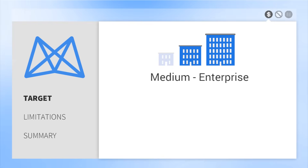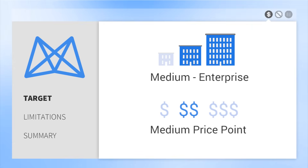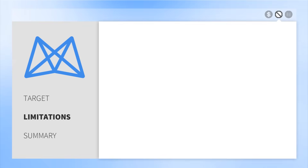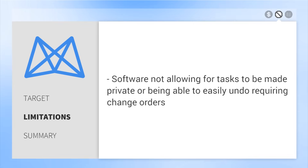Made for mid-sized companies to enterprises, Mavenlink is available at a medium price point. A limitation we noticed and confirmed from reviews on our website is that there are a few minor frustrations, such as the software not allowing tasks to be made private, or being able to easily undo requiring change orders.